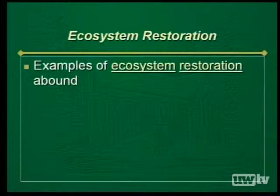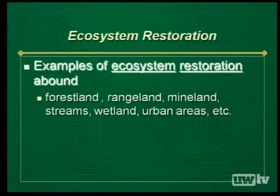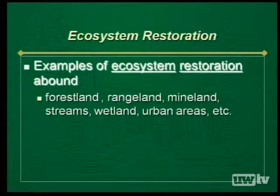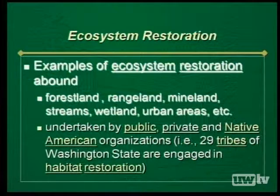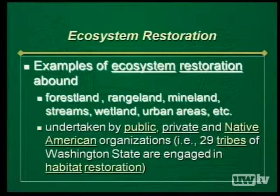There are many examples of ecosystem restoration. Restoration is being done on a variety of different types of land: forest land, rangeland, mine land, streams, wetlands, urban areas, and other types of areas. Restoration is being undertaken by public, private, and Native American organizations. For example, the 29 tribes here in Washington State are engaged in a variety of habitat restoration projects — some on the Quinault Reservation involving marine resources, some on the Yakima Reservation involving forest land restoration, and there are many other examples.